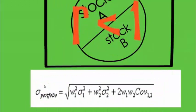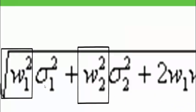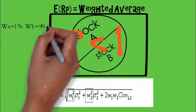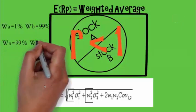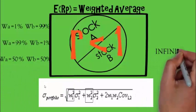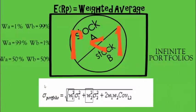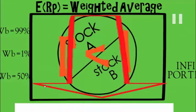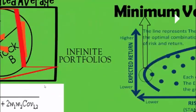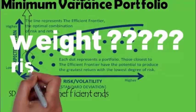We know how to calculate the risk of the portfolio: it is the square root of (weight_A² × σ_A² + weight_B² × σ_B² + 2 × weight_A × weight_B × covariance(A,B)). The weight can range from 1%/99% to 50/50 to 60/40 — there are infinite combinations. The question is: what weight gives the minimum risk? That is the minimum variance portfolio.